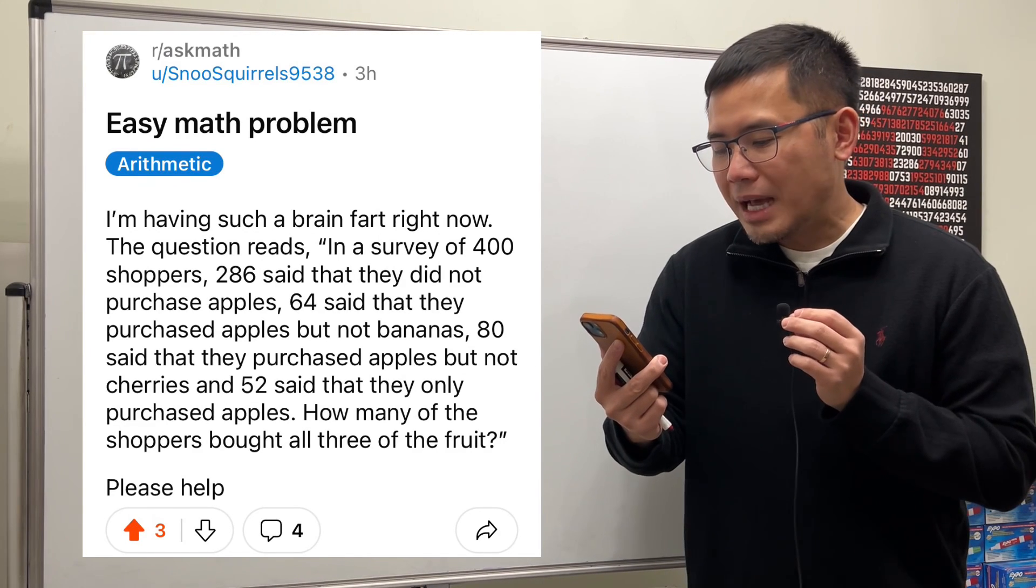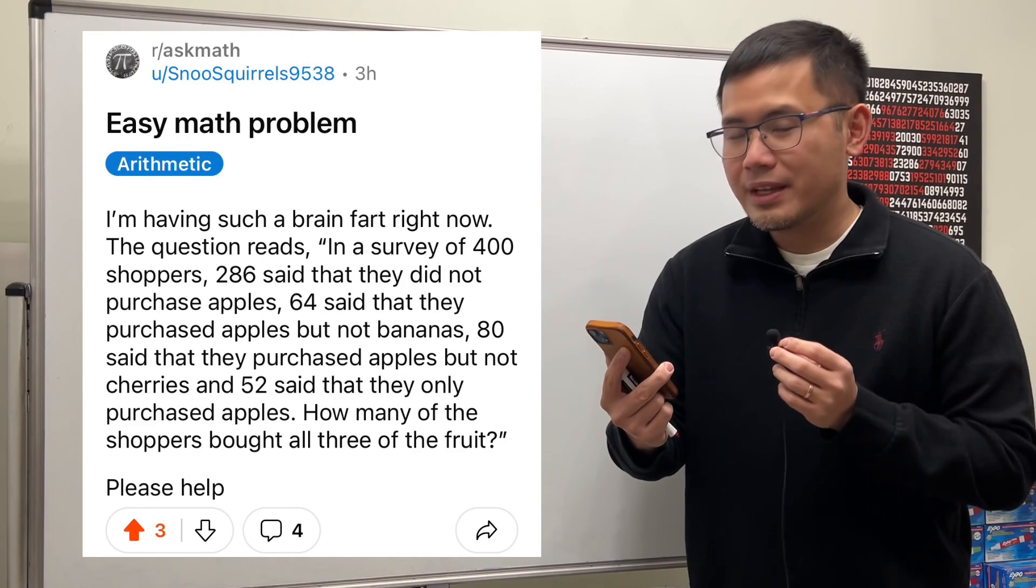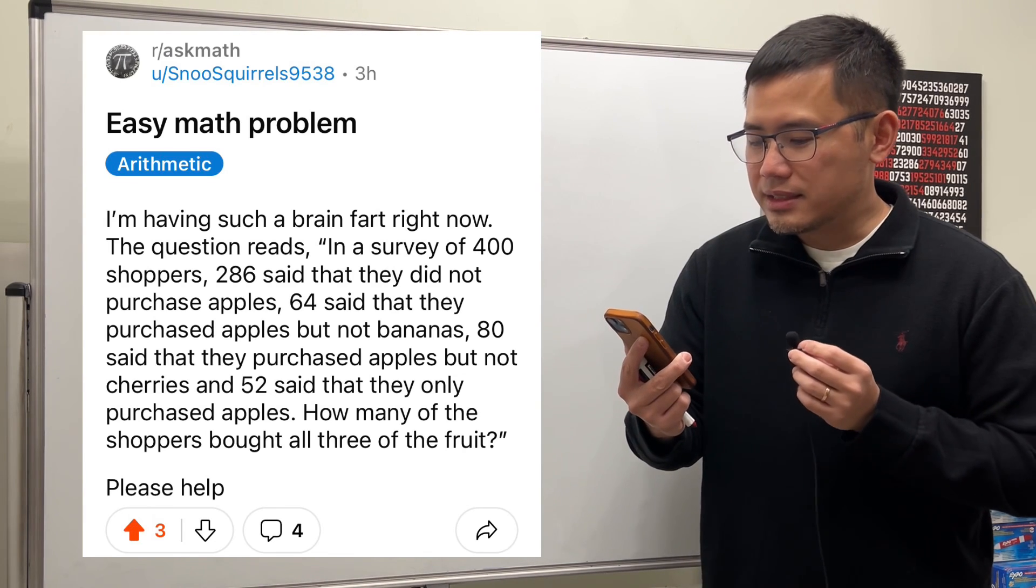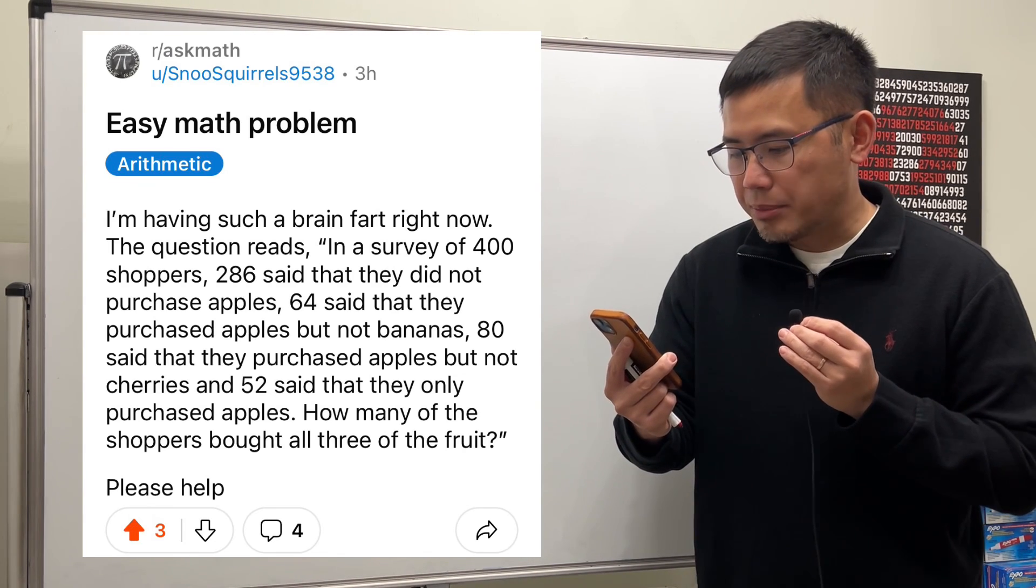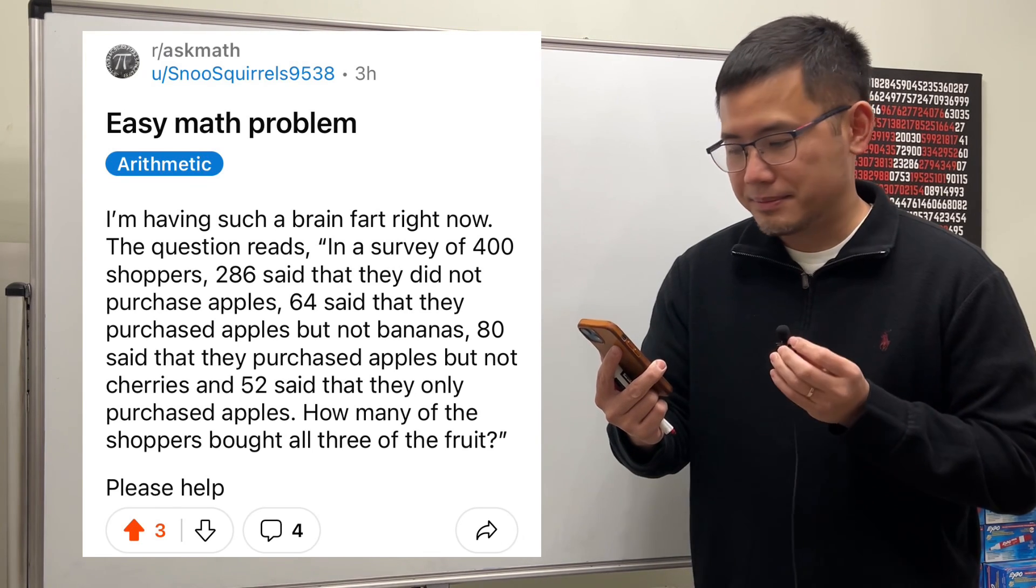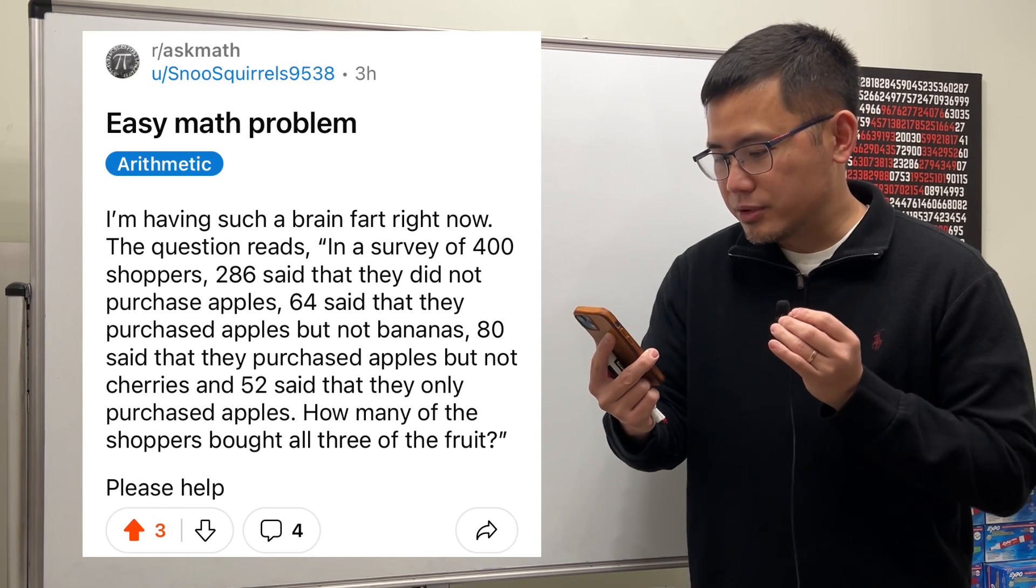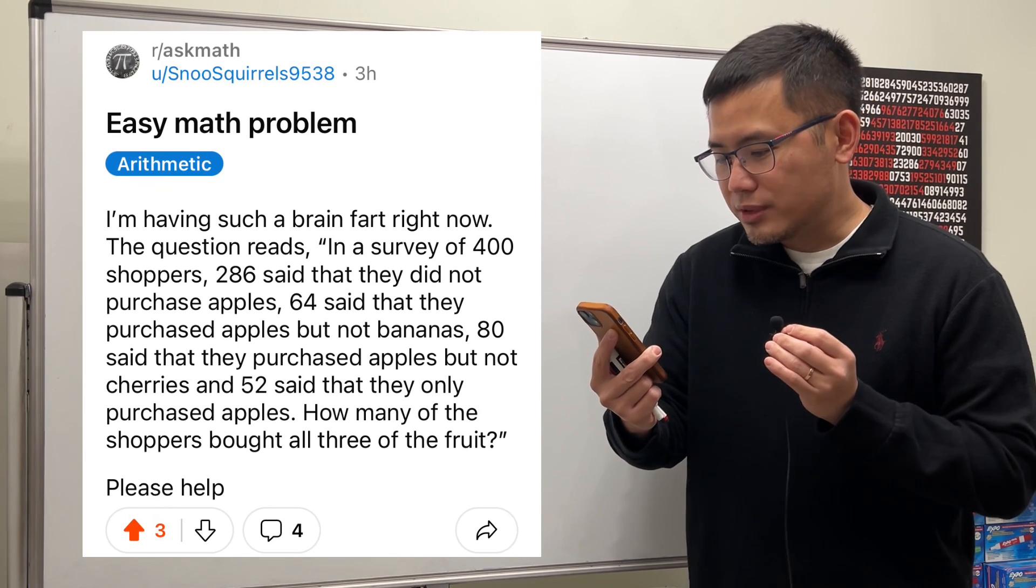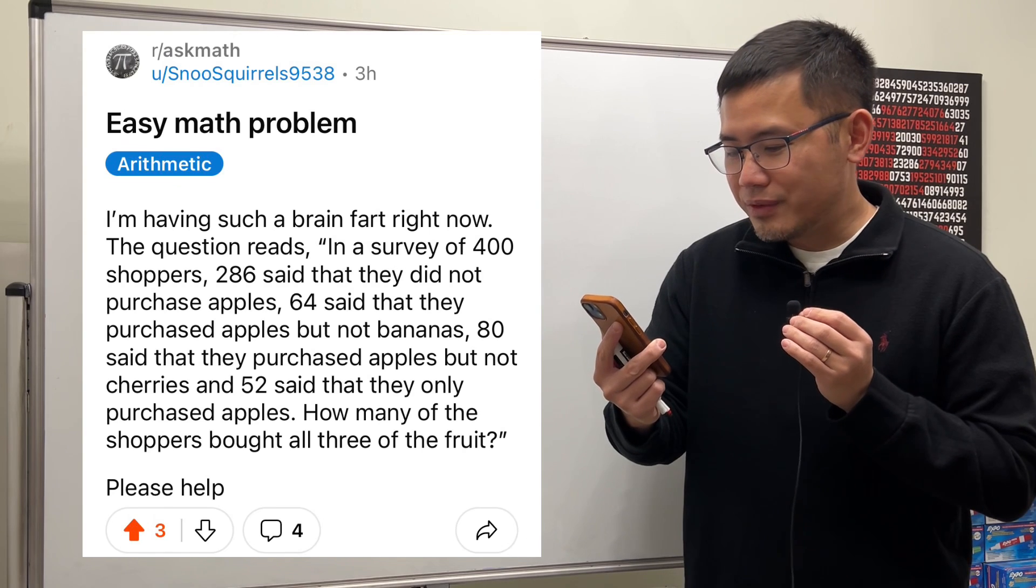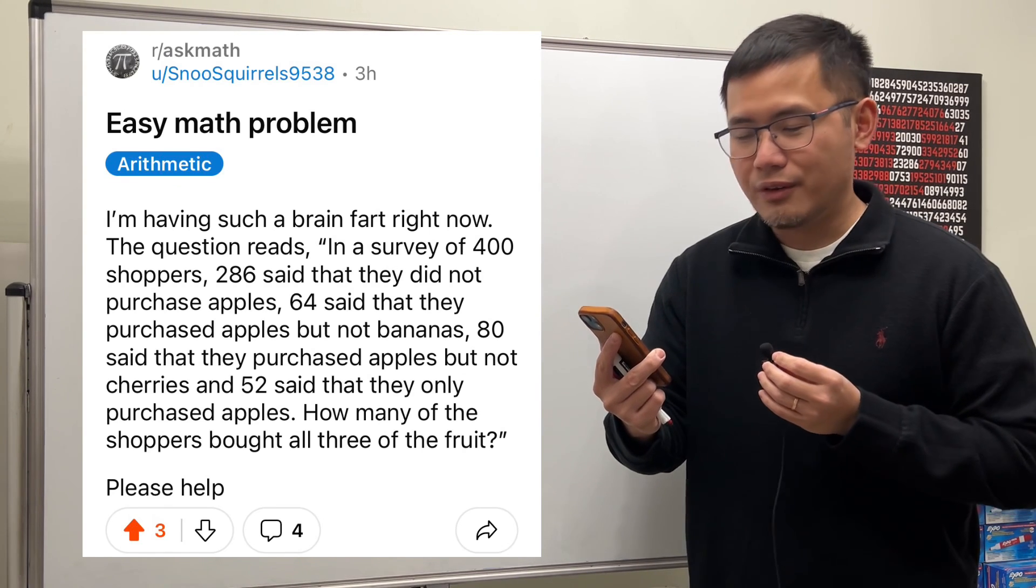Easy math problem. I'm having such a brain fart right now. The question reads, in a survey of 400 shoppers, 286 said they did not purchase apples, 64 said that they purchased apples but not bananas, 80 said that they purchased apples but not cherries, and 52 said that they only purchased apples. How many of these shoppers bought all three of the fruits?